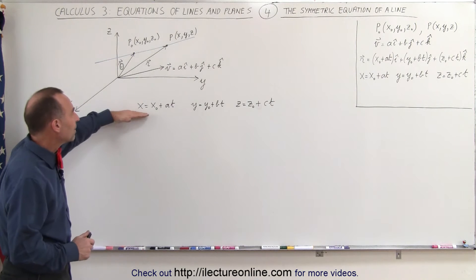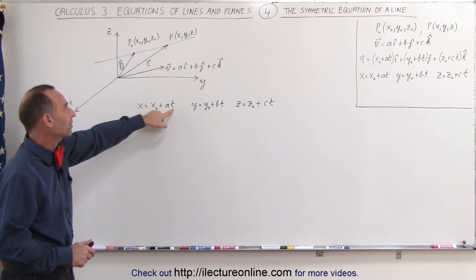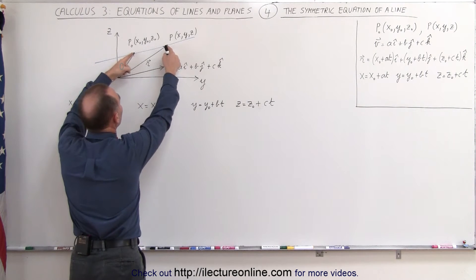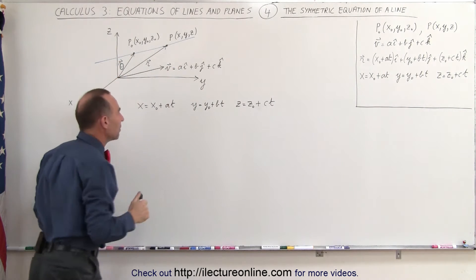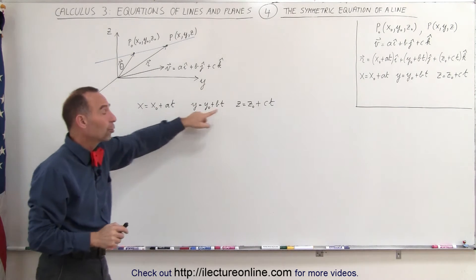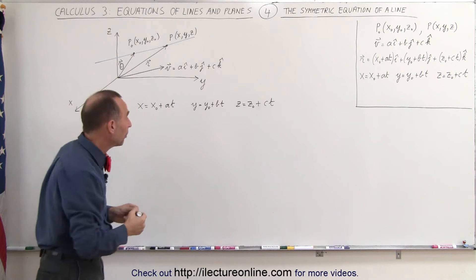Now let's start with the parametric equations. Remember that t was a relationship between the distance between p sub naught and p and the magnitude of v. But if we now take this equation and solve each of these equations for t, let's see what we end up with.